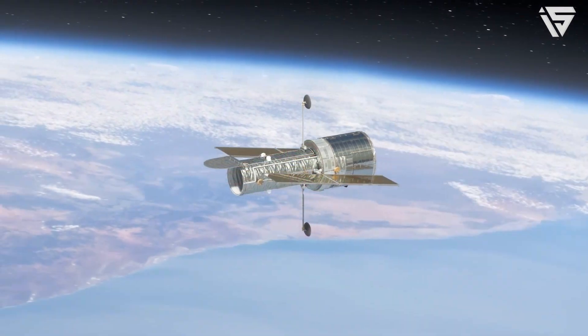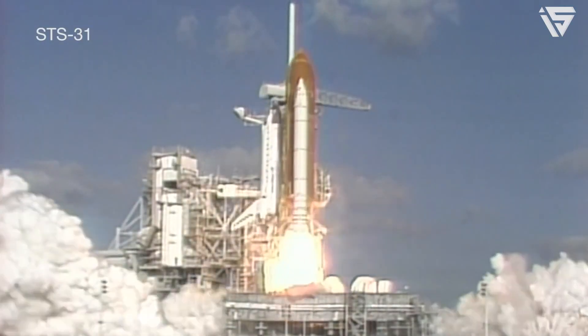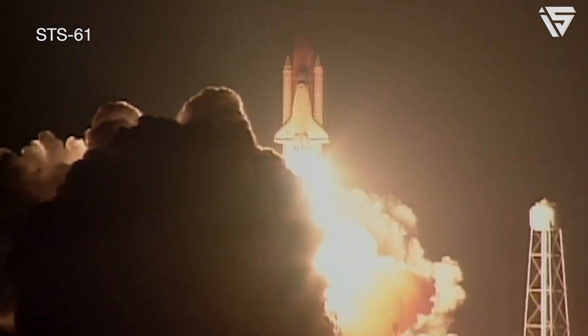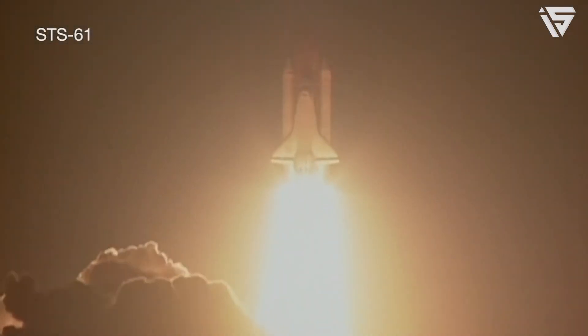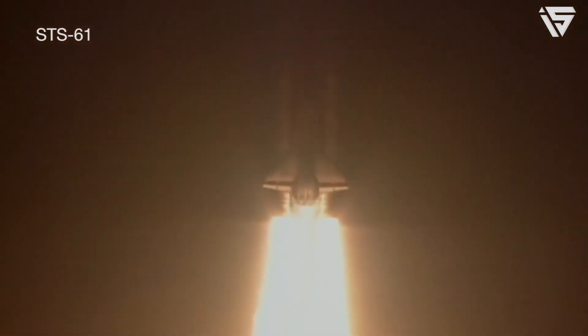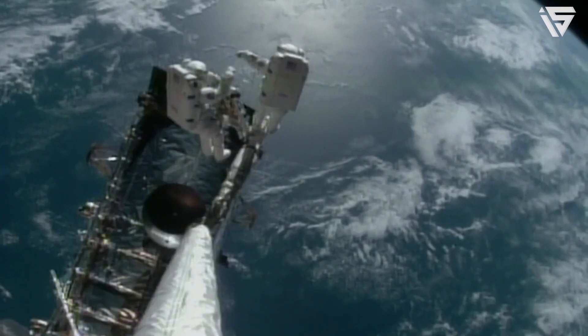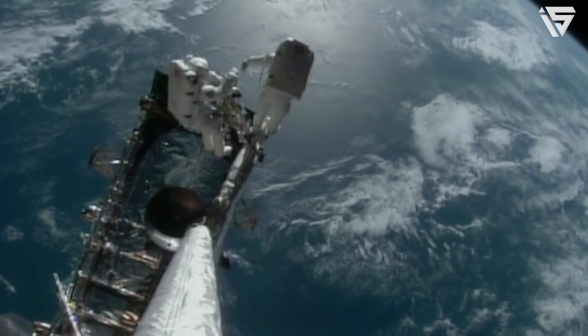The Hubble Deep Field. It was in 1995 when astronomer Robert Williams pointed the Hubble Space Telescope onto a part of the sky for 100 hours which seemed to have nothing worthy of grabbing attention. He received intense criticism for this, as most people thought that this was not a good idea, and many believed that this was going to waste the valuable time of the Hubble Telescope.